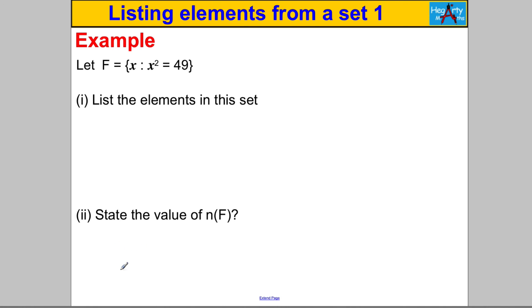Next one, pause the video, have a go. Let F be the set of x such that x squared is equal to 49. So what x values are such that x squared is 49? We're taking square roots. Remember, we get two answers: x is 7 or x is negative 7. So the elements in this set are negative 7 and 7. If someone asked you how many elements in the set of F, it is 2 - two unique ones.